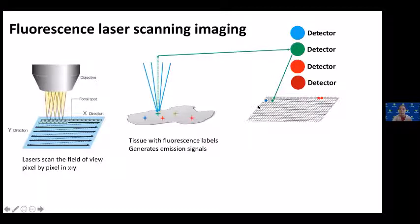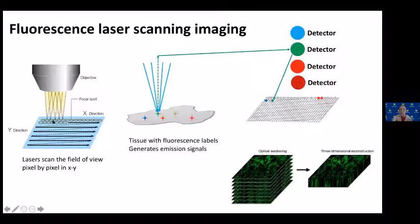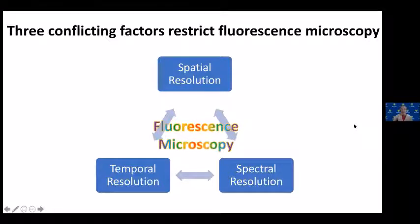The detector maps that pixel onto the displayed image as a single pixel — that's how a fluorescence image is produced. Since multi-photon microscopy can image very deep into tissue, for 3D imaging the objective moves one step further down into the tissue and repeats the scanning process to collect an image at a different depth. With many depth images collected, we can reconstruct a full 3D image.